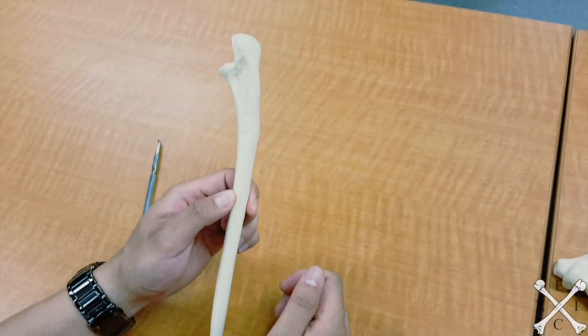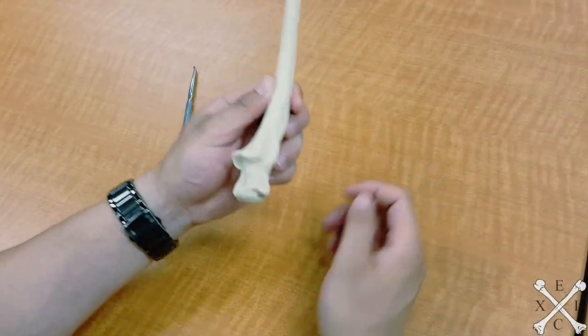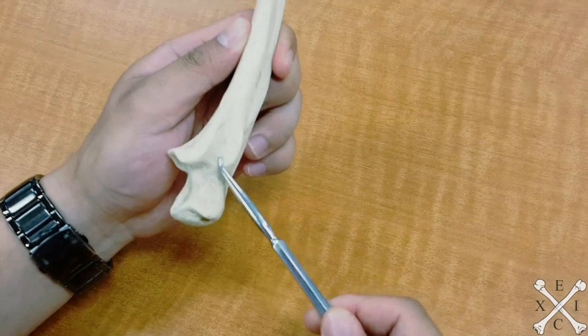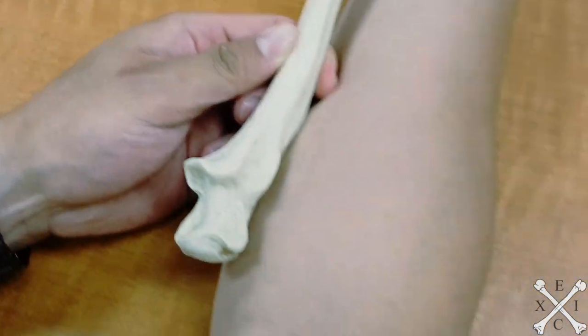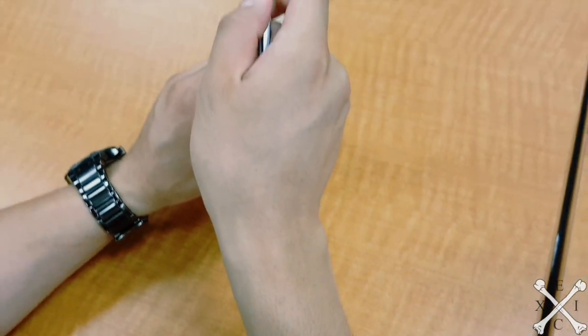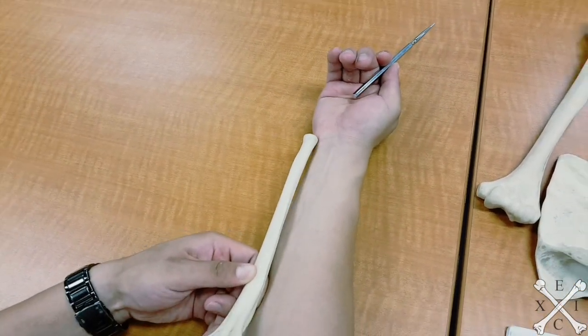This is the ulna and in order to find out the orientation of the bone, we have the radial notch facing laterally and then we have the styloid process facing medially. It sits right here like this, so this is your right ulna and the landmarks are your olecranon right here.